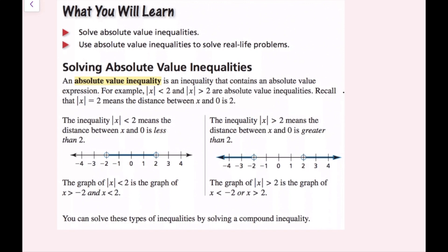Recall that the absolute value of x equals 2 means the distance between x and 0 is 2. The inequality, the absolute value of x is less than 2, means the distance between x and 0 is less than 2. This graph can represent that. We unwrap the absolute value and get x is greater than negative 2 and x is less than 2. I'll explain why that is the case in the next section.